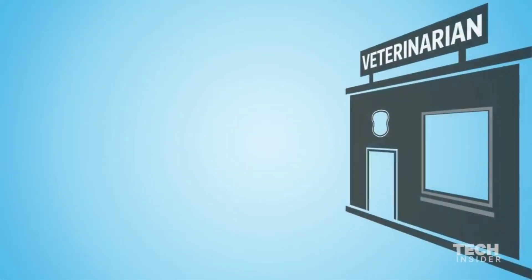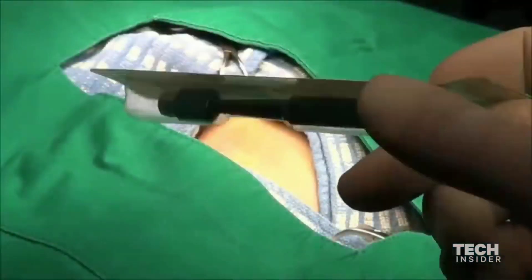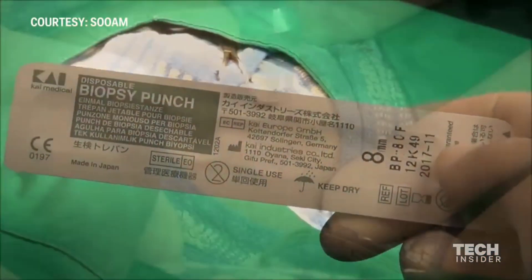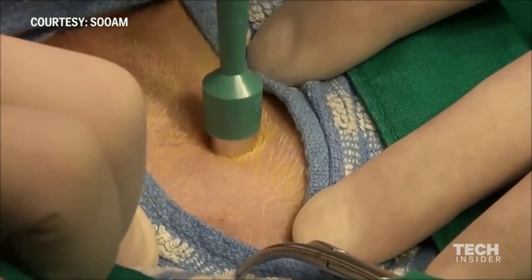Next, you need to take your dog to the vet and get a biopsy sample. Using a tool called a biopsy punch, your veterinarian will cut out an eight millimeter wide sample of flesh from the abdominal area of the dog.